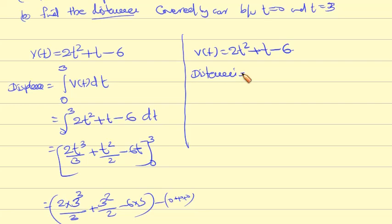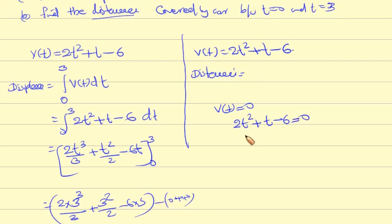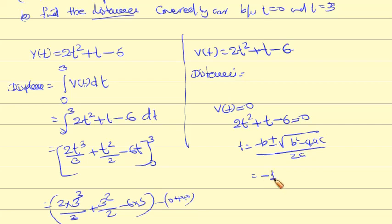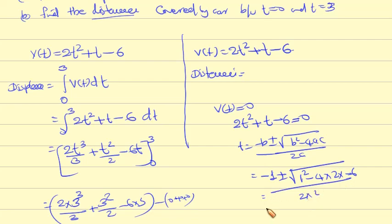Displacement is 9/2. Now for the distance, we need to find where v(t) = 0. Using the quadratic formula: v(t) = [-b ± √(b² - 4ac)] / 2a = [-1 ± √(1² - 4(2)(-6))] / (2·2).